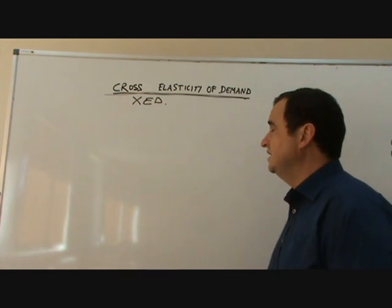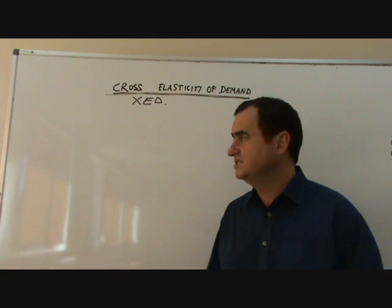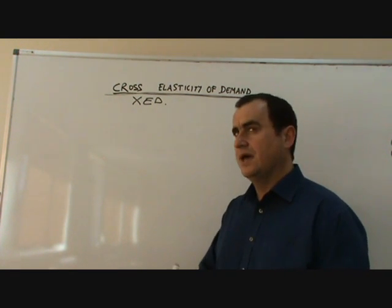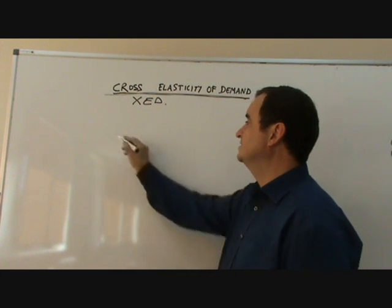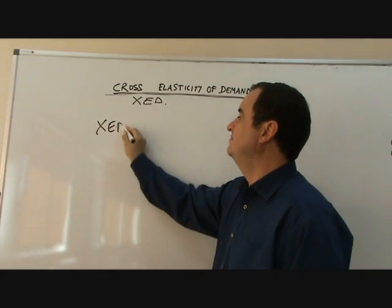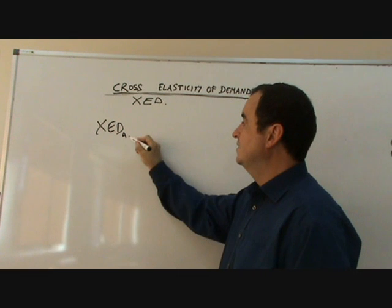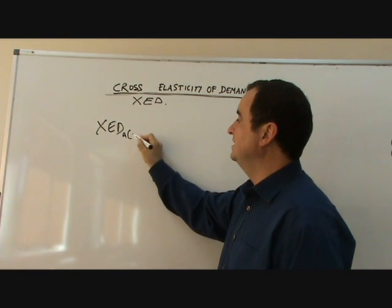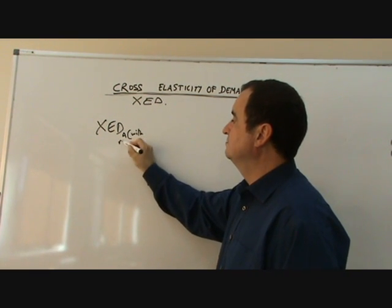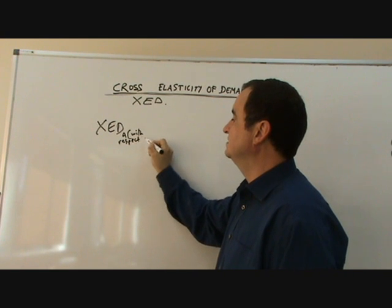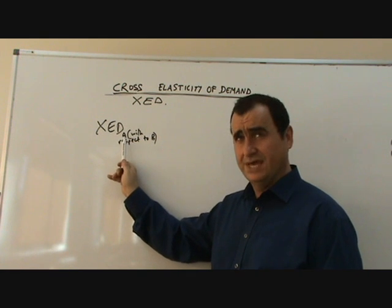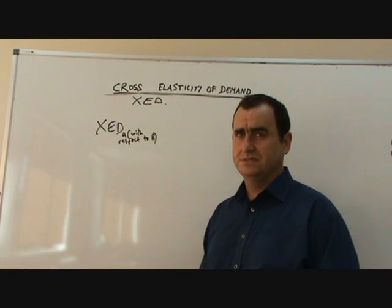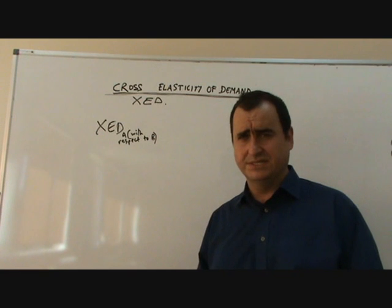So let's go through this. The equation is quite easy. You might think it's difficult but it's actually quite easy if you know the PED one. Because the cross elasticity of demand for good A with respect to B. So it's already looking complicated but believe me it isn't. What that means is we're going to measure how responsive is the demand for good A when B changes price. A is the subject of this study.